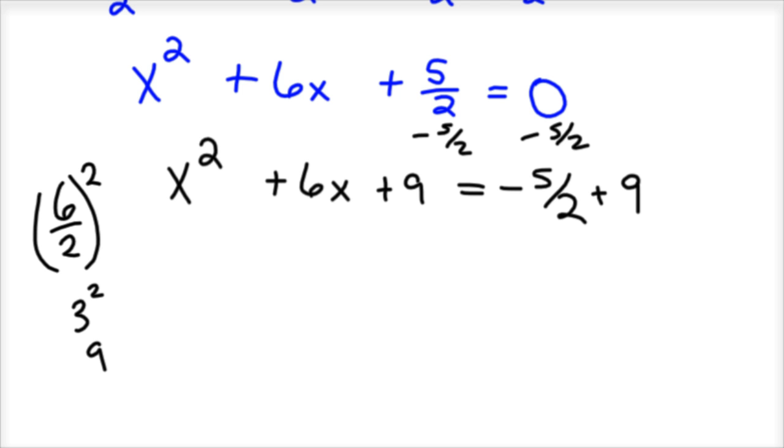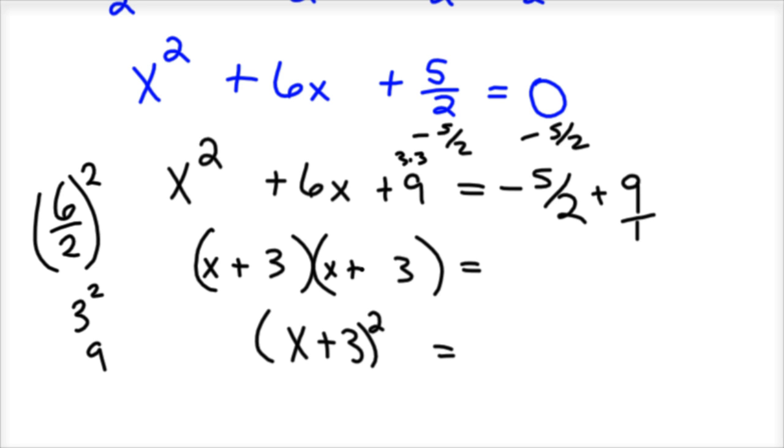Well, x squared plus 6x plus 9, that factors into x plus 3, x plus 3. 9 has 3 and 3 or 9 and 1. Well, it's 3 and 3. If you check that, that's 3x and 3x, which is 6x. And so you'd have x plus 3 squared equals, well, now we need to have common denominators in order to add this right side. So 5 halves plus 9 over 1, well, that's 5 halves plus 18 over 2, in order to add those together.